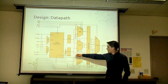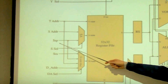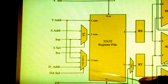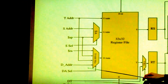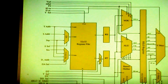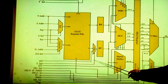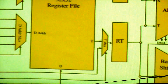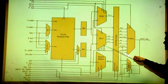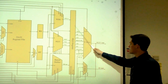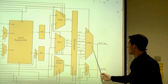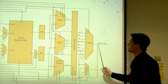In the data path, we have two muxes for the S address, so we can select the stack pointer if needed, or the S address for any other instructions. The D address mux can select the return address, stack pointer, T address, or D address, controlled by the DA select signal from the control unit. Here's our 32 by 32 register file feeding RT and RS. Two of our enhancements — the barrel shifter and vector operations unit — are in parallel with the ALU. The divide by zero flag comes out of the ALU into the high-low register.